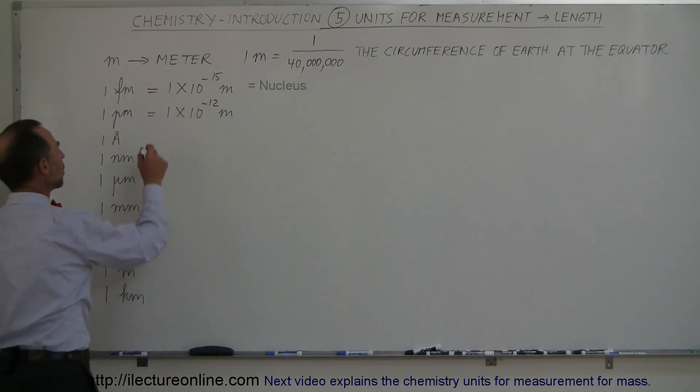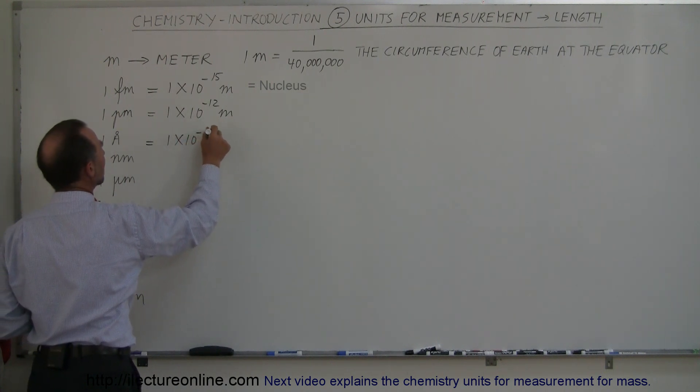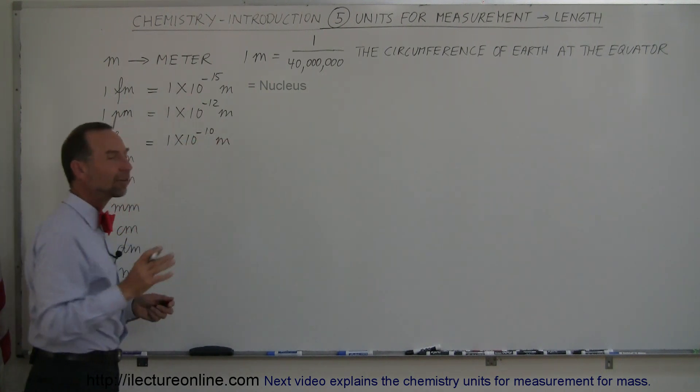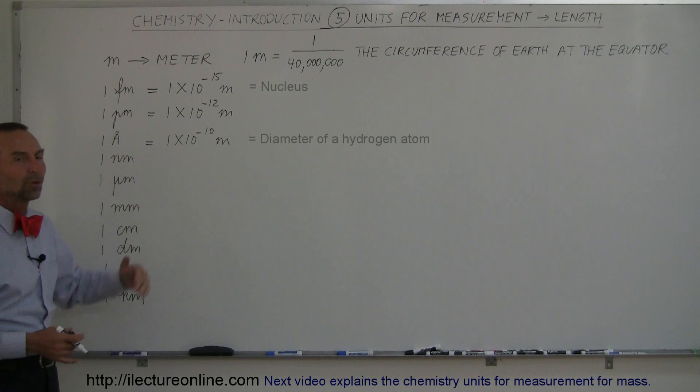Angstroms is something we will use quite a bit. That is 1 times 10 to the minus 10 meters. It turns out that an angstrom is roughly the diameter of a hydrogen atom. A hydrogen atom is a little bit above average size atom because of the arrangement between the proton and the electron. But you can say that most atoms have diameter sizes of roughly 1 angstrom, which is 1 times 10 to the minus 10 meters.